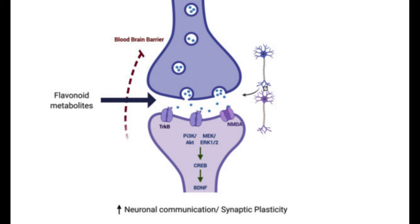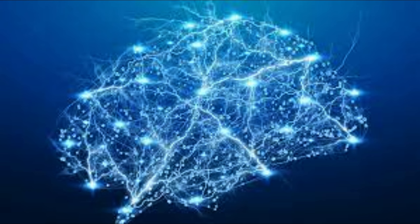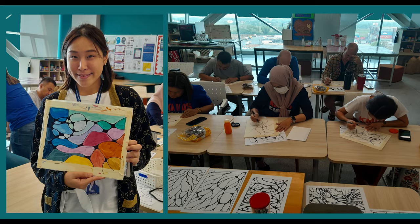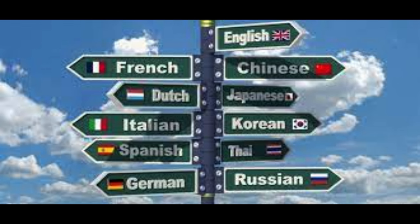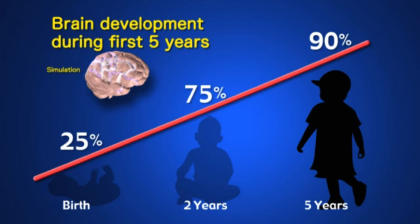There are several different types of neuroplasticity, each of which contributes to different aspects of brain function. For example, experience-dependent plasticity refers to the changes in the brain that occur as a result of a person's experiences, such as learning a new skill or language. In contrast, developmental plasticity refers to changes in the brain that occur during early development and shape the brain's structure and function.